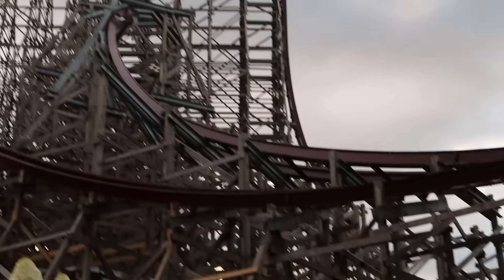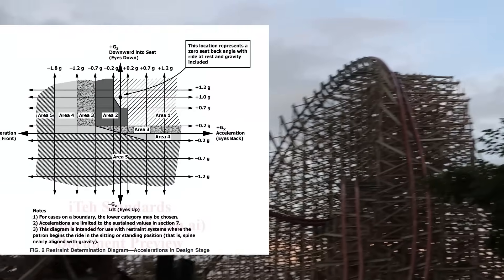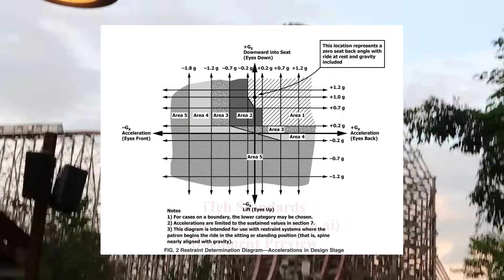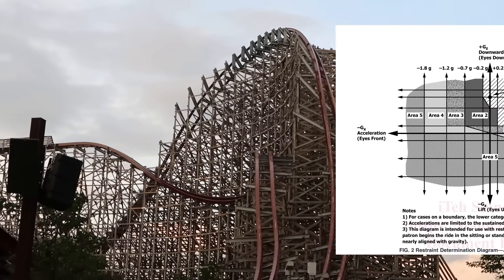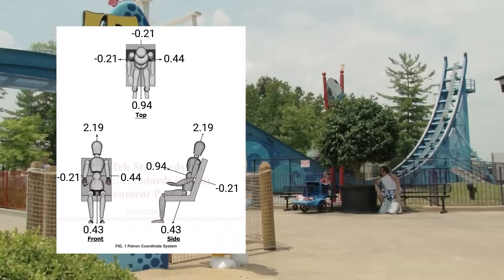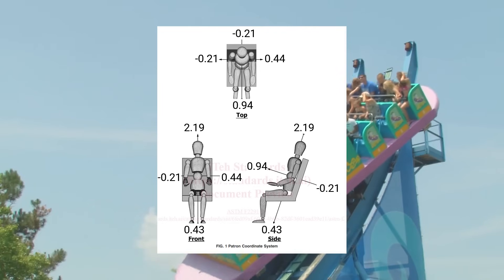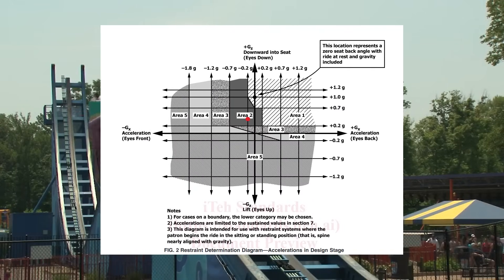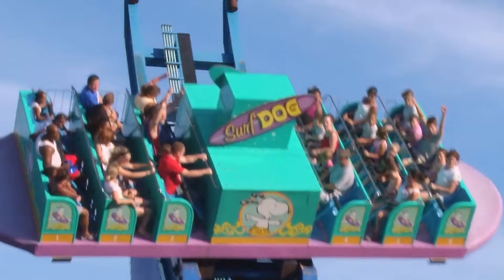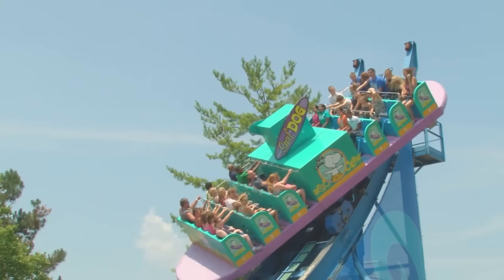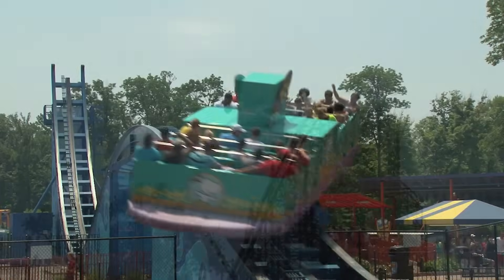The area a ride's restraints must comply with is determined by a specific graph. Ride manufacturers must calculate the g-forces their rides will subject riders to and plot them on this graph to determine the minimum qualities of their restraints. Let's do a quick example with the Zamperla skater coaster. Plugging in the recorded g-force data from the ride, we can see that this ride falls under class 2. Examining the ride, we see it uses one lap bar for six riders that can lock in multiple positions and is not redundant — making it a class 3 restraint, more compliant than it needs to be.